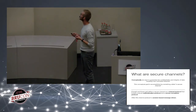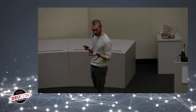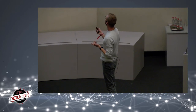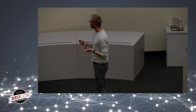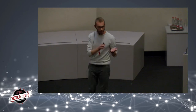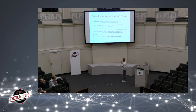So what is this secure link we are trying to build? Conceptually, this is a channel which we use to send messages, and we want those messages to have very specific properties. We want to guarantee that what we send over this link is first of all confidential — that no one can read what we are sending. We also want to make sure the data has not been modified, which we denote by the integrity notion.